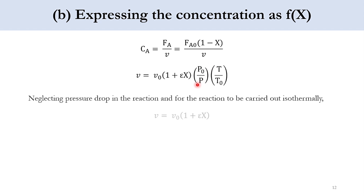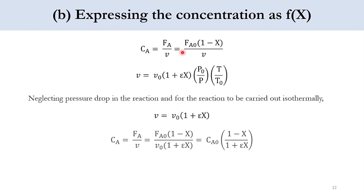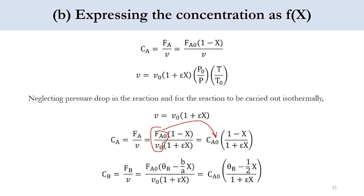Substituting into the concentration expression: CA = FA₀(1 − X) / [v₀(1 + ε·X)] = CA₀(1 − X)/(1 + ε·X). Similarly, CB = FA₀(theta_B − X/2) / [v₀(1 + ε·X)] = CA₀(theta_B − X/2)/(1 + ε·X). The same form applies to CC and CI.